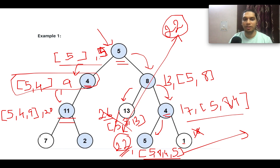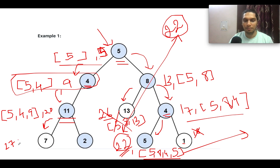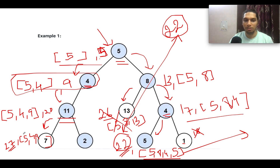Moving to the other part of the tree, we go in both directions — left and right. Going left: 20 plus 7 gives 27, and the running list is [5, 4, 9, 7]. Since 27 is not equal to the target value, we discard this branch.